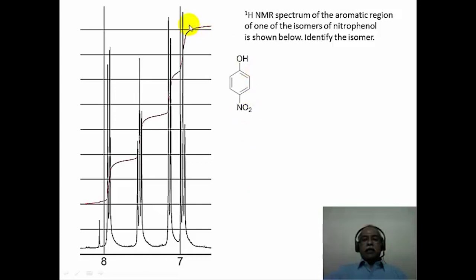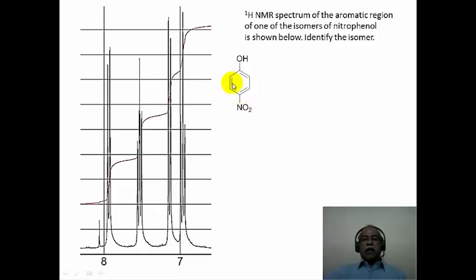One can straight away rule out the possibility of para-nitrophenol because para-nitrophenol has only 2 types of aromatic hydrogen — the ones ortho to the hydroxy functional group and the ones ortho to the nitro functional group. So this is an A, A prime, B, B prime pattern. Please recall that an A, A prime, B, B prime pattern is symmetrical with respect to the center of the spectrum.